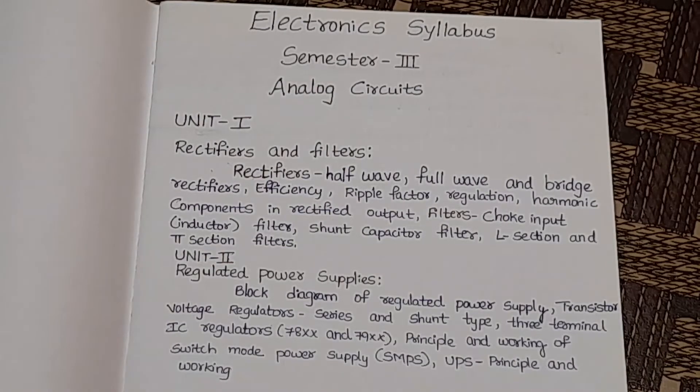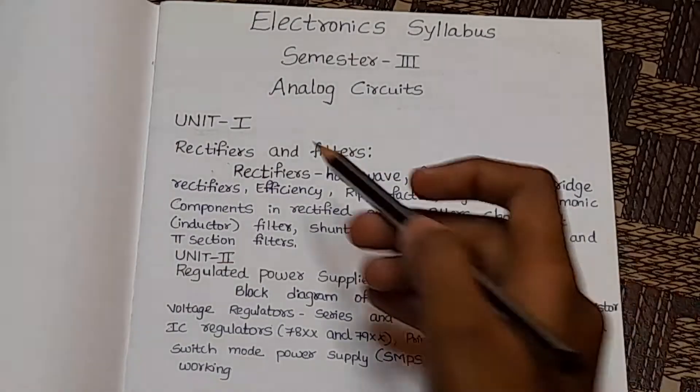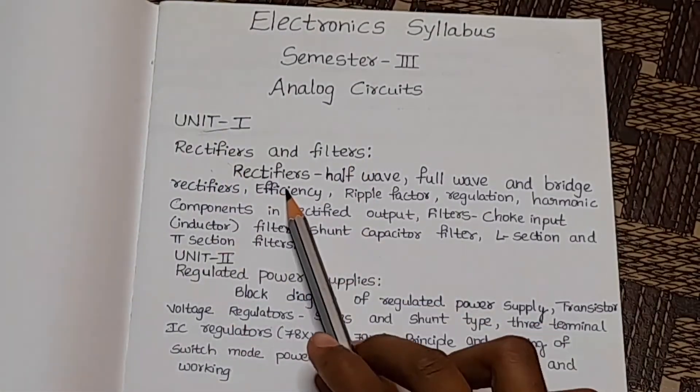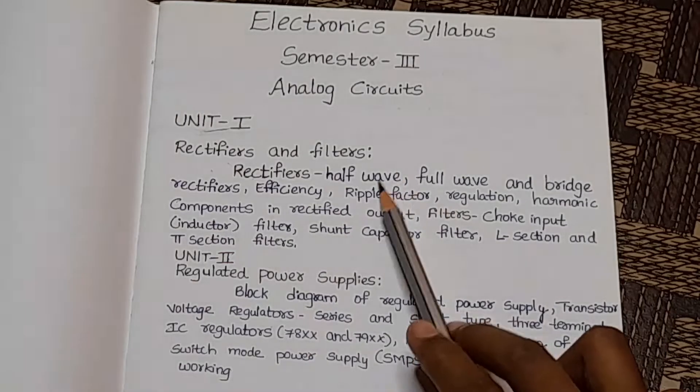In this video, we will discuss the second-year third-semester Electronics syllabus about Analog Circuits. In this, we have four units. In Unit 1, we will discuss rectifiers and filters. In rectifiers, there are three types: half-wave,